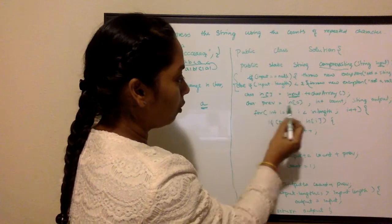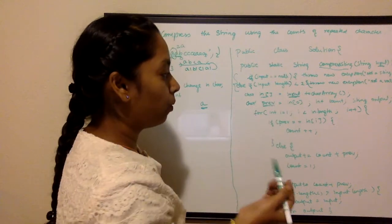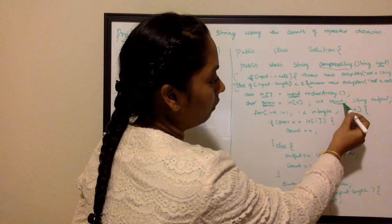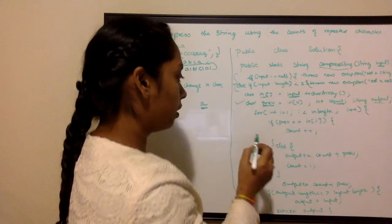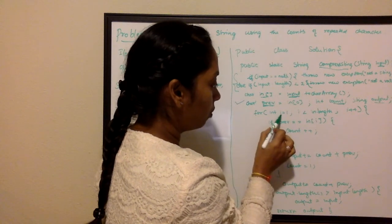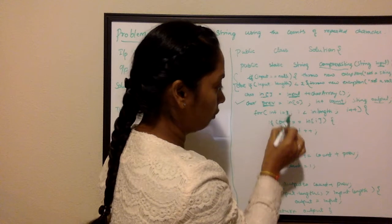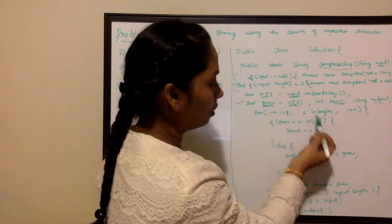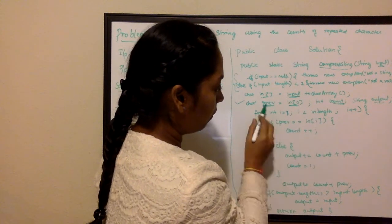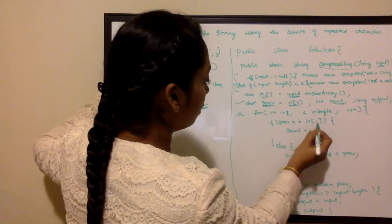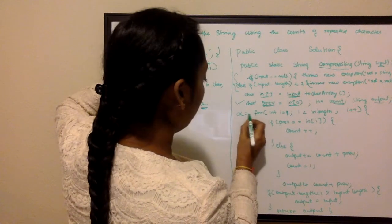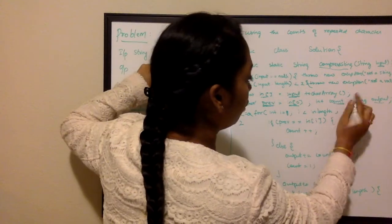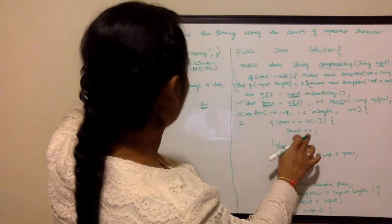I'm going to convert the input string into a character array. I'll have a 'previous' variable which holds the previous character, a 'count' integer variable, and an output string. That's all the variable declarations. The actual loop starts at index 1, not 0, because I've already taken the character at index 0 into the 'previous' variable. If the current character equals 'previous', I increase the count — so count becomes 2.